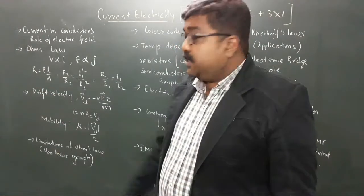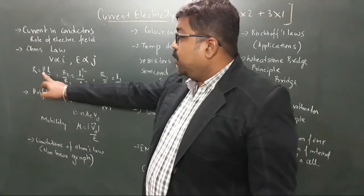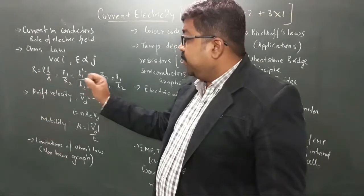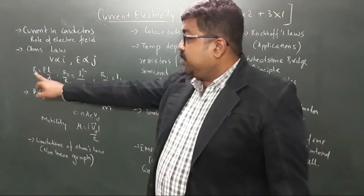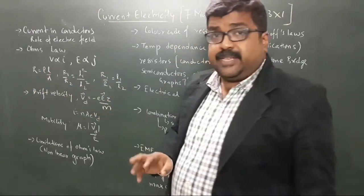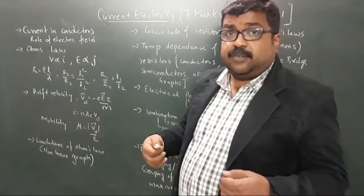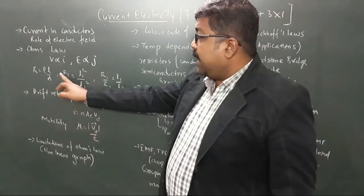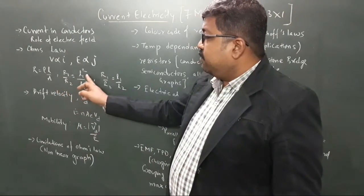The other relation you need to understand is R equals rho L by A, where rho is the resistivity. There are two relations between R and L. In case a wire is stretched, for such problems you have to use R1 by R2 equals L1 squared by L2 squared.